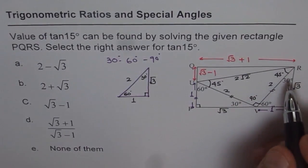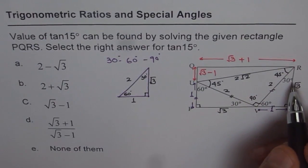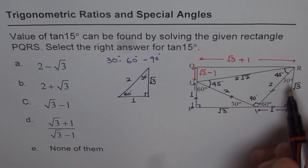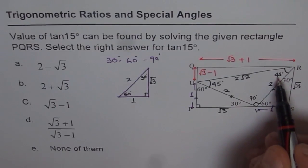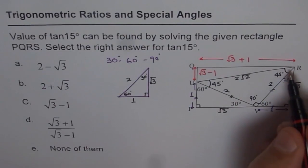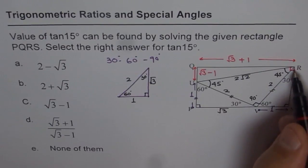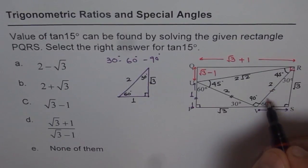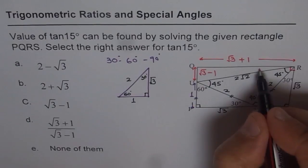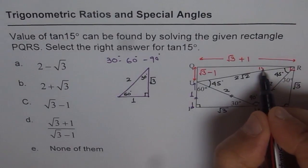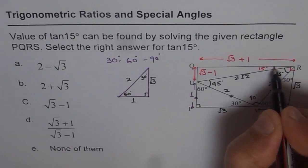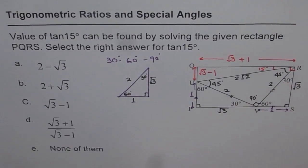Let's get back to angles. We have 30, 45, and we know this is 90 degrees. Therefore, the remaining angle should be 90 minus 45 minus 30, which is 15 degrees. So we get a 15 degree angle here.